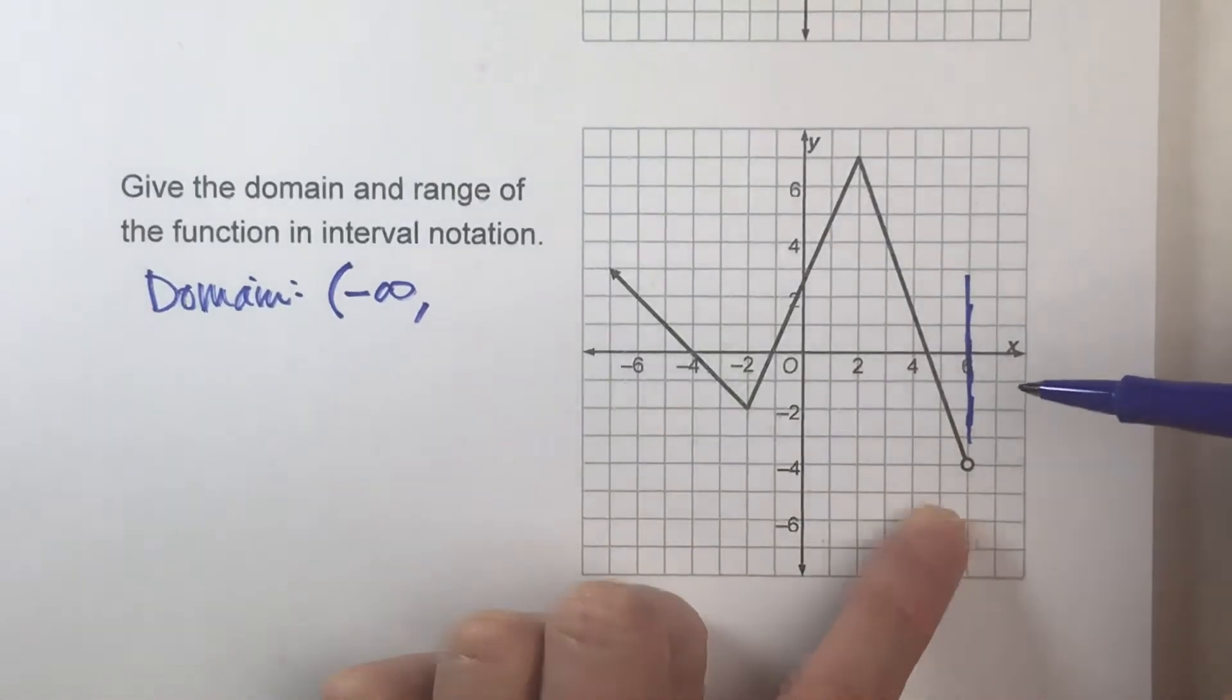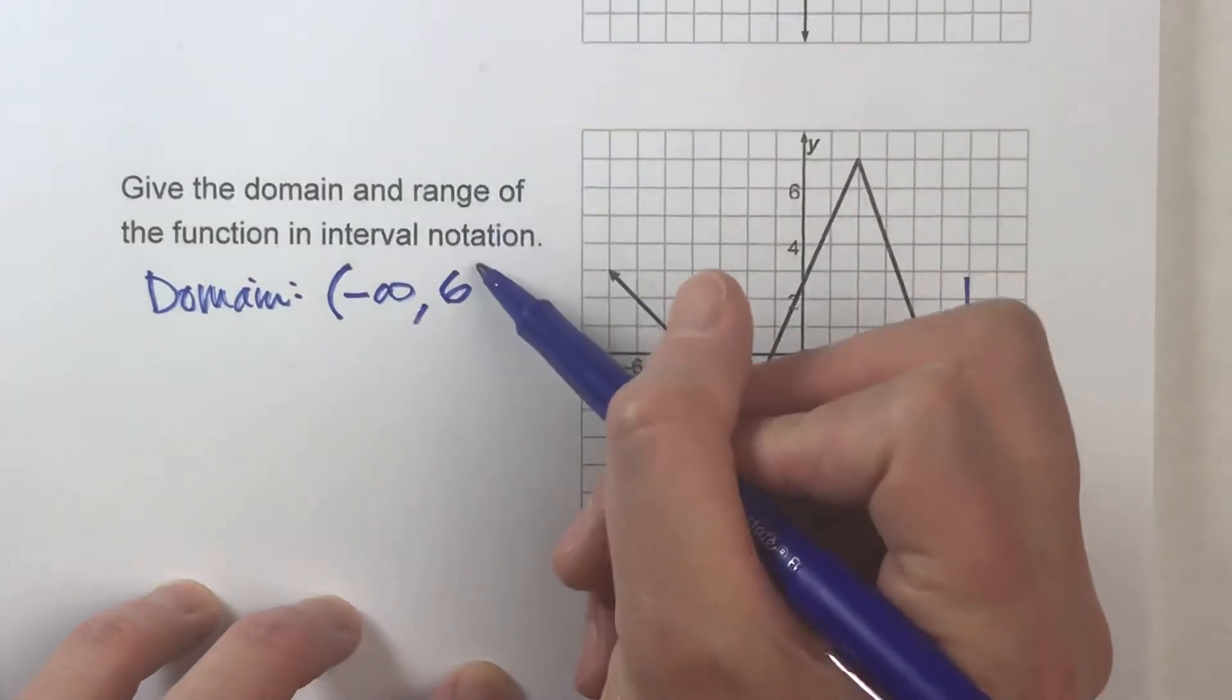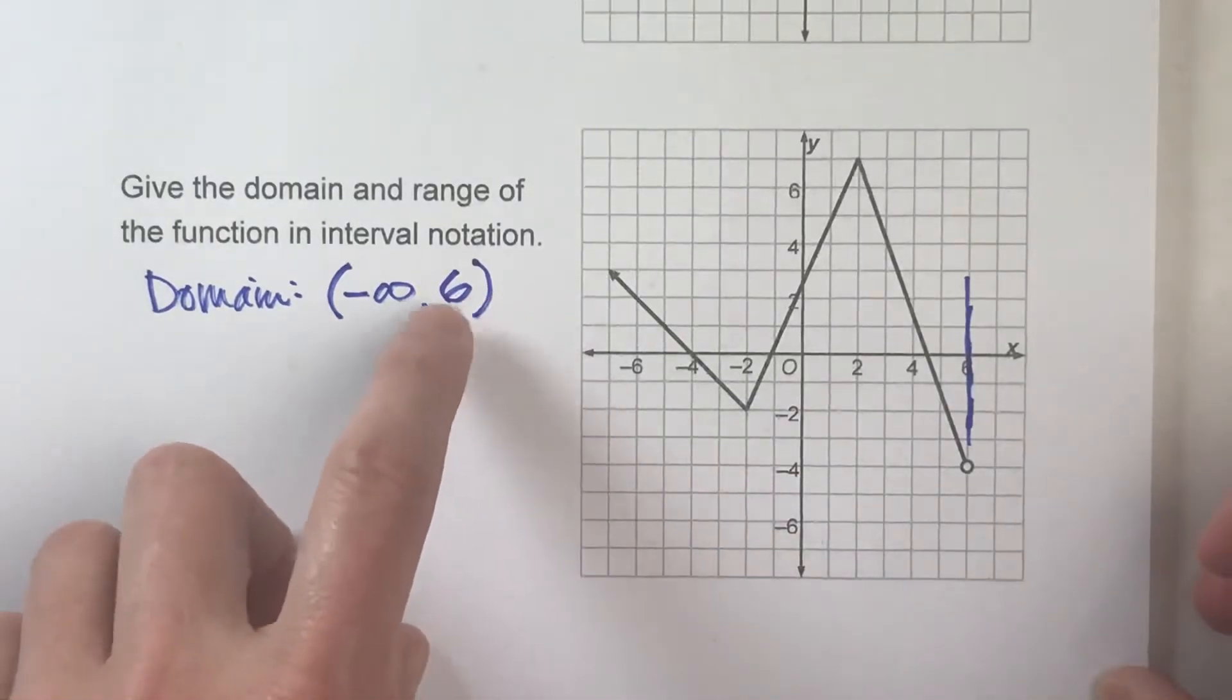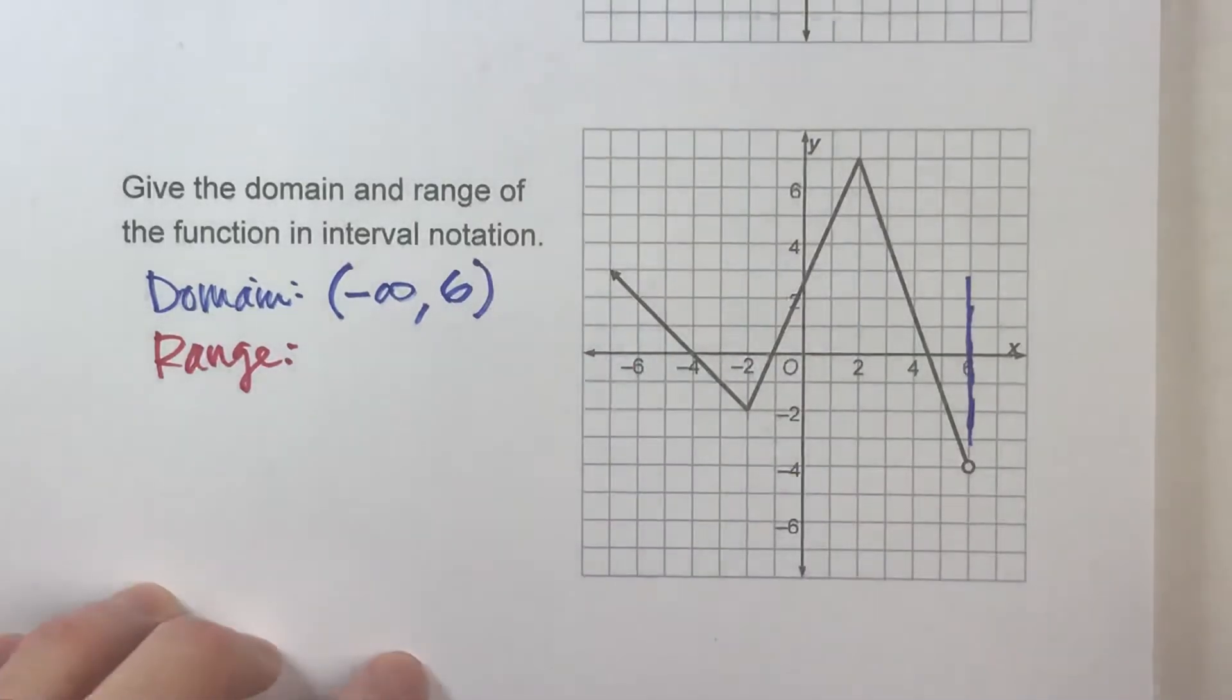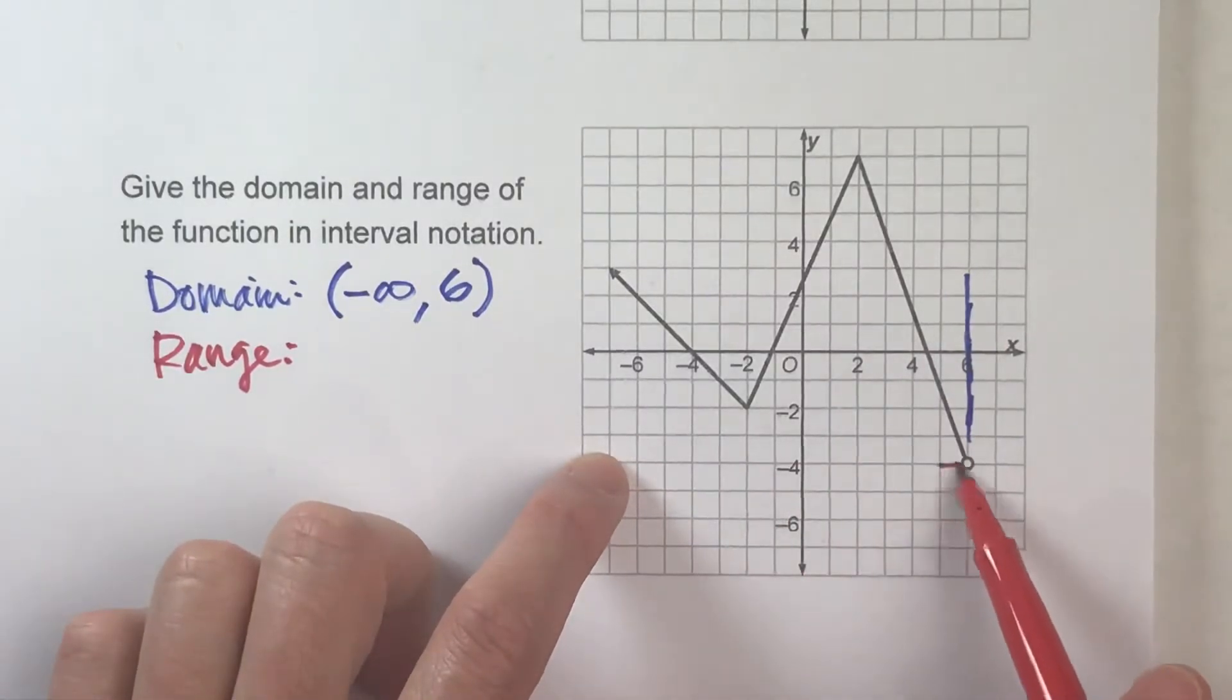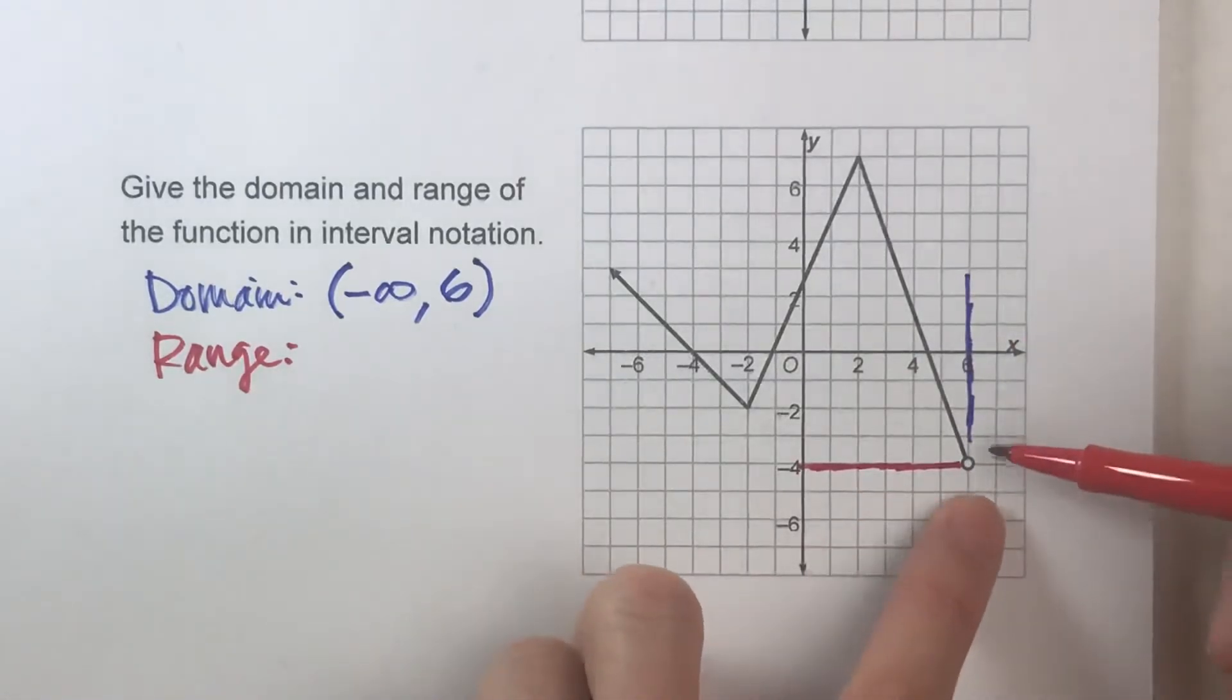So we'll list 6 here, but we're going to put a parentheses to show that x can go up to 6, but it doesn't actually include that value. Now, let's do the range. The range is the set of y values. So let's start at the bottom. What's the smallest y value can be? Starting here. So notice, it bottoms out at negative 4, but again, we've got that open circle.